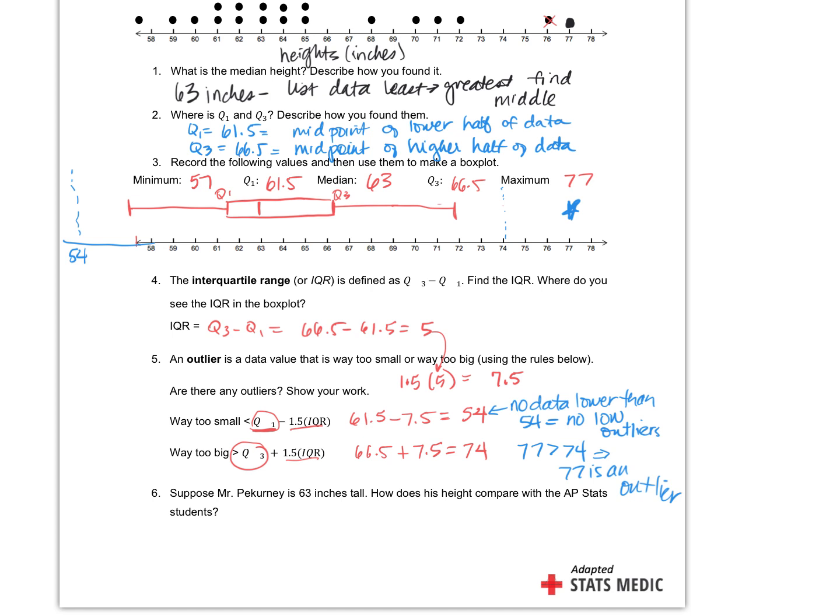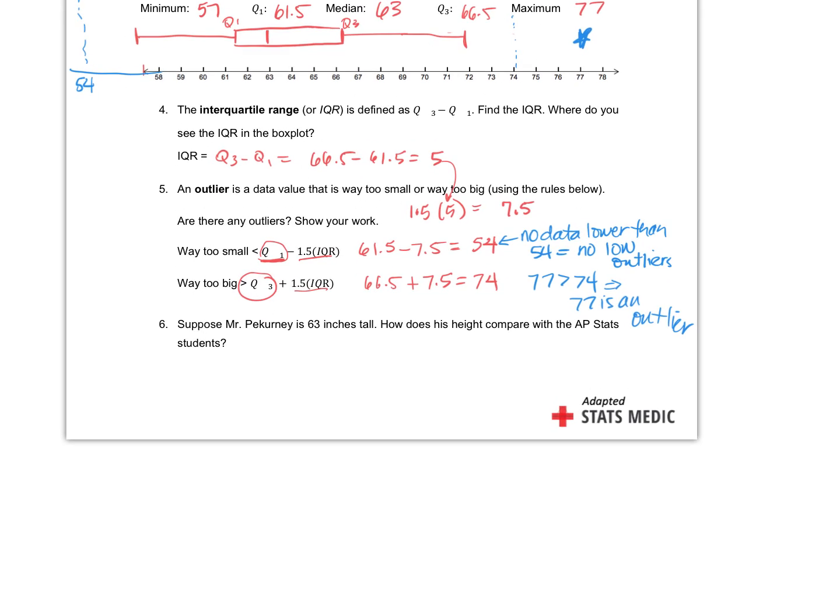So suppose Pekerney is 63 inches tall. I don't really know what his height is. How does his height compare with the rest of the students? He is the median. So it's a form of an average, right? So we would say something like, since 63 is the median value, what does that mean? That means 50 percent of the students are shorter than him, and 50 percent are taller. So that's what median means.